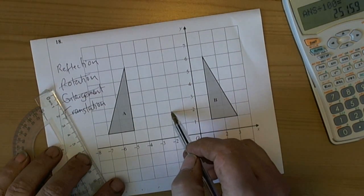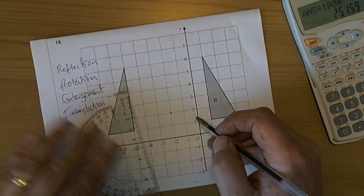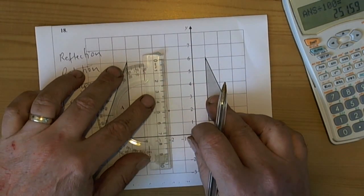so 1, 2, 3, 4, 5, 6, so 1, 2, 3. So the mirror line's going to be going through that point there,